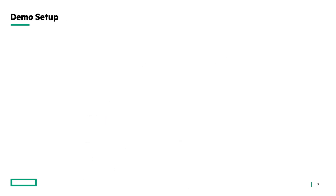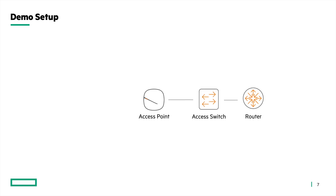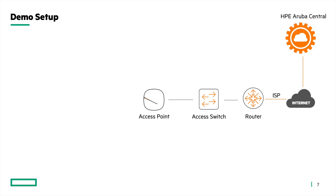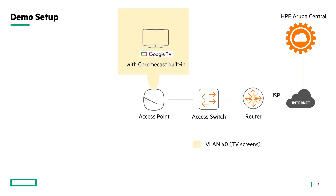Now let's take a look at our demo setup. For the demo we will have a simple setup: an access point connected to a switch, which is connected to a router. The router will be connected to the internet via ISP, and all devices will be able to reach the internet. Aruba Central will be managing all these devices. An Android TV will be connected to the access point on VLAN 40 via an SSID called TV Screens.